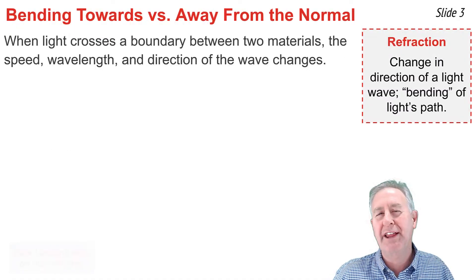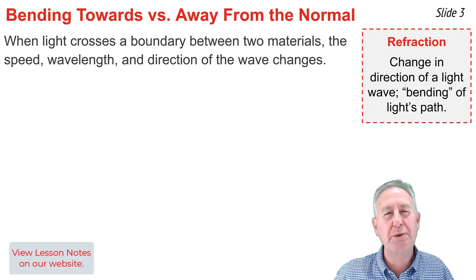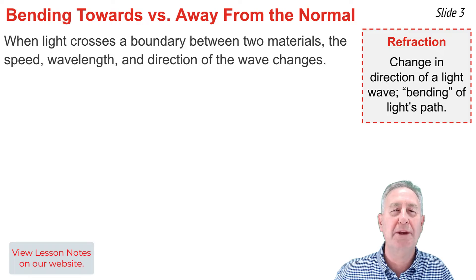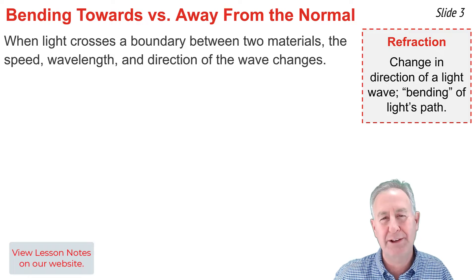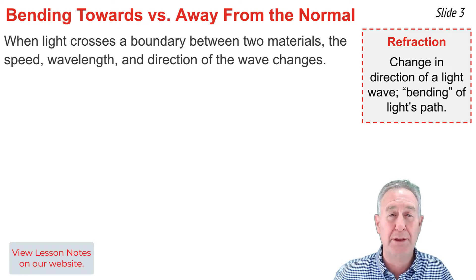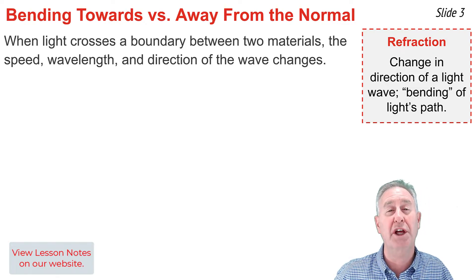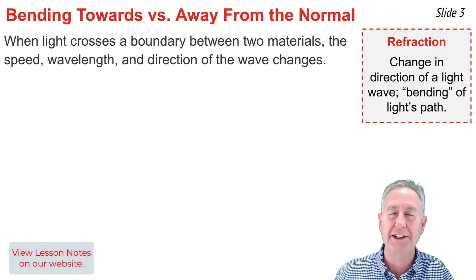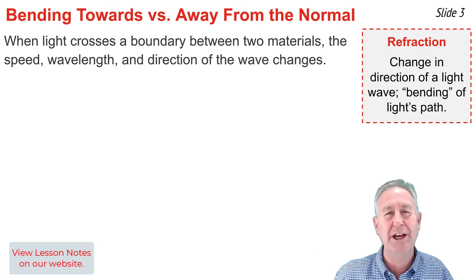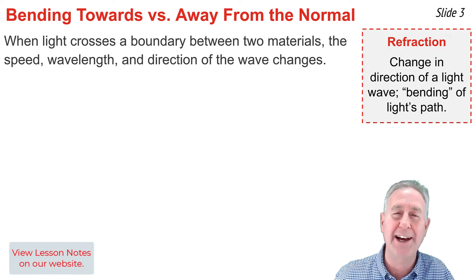When a light wave crosses the boundary between two materials, it undergoes a change in speed, wavelength, and direction. This change in direction of a light wave at the boundary is known as refraction. Instead of traveling along a straight line path, the path of light is bent at the boundary. We often represent this by a ray diagram.